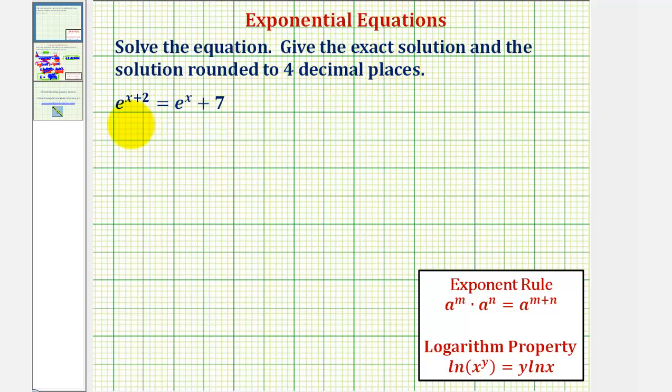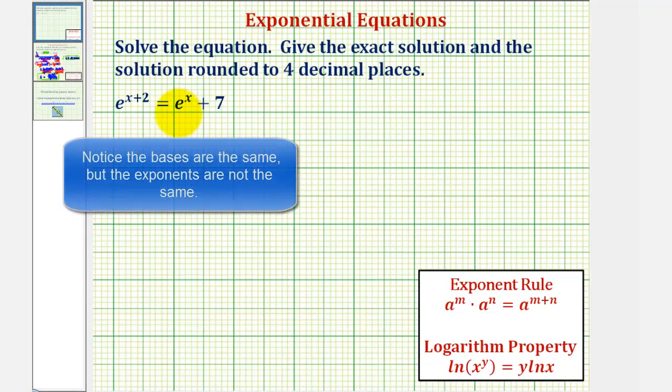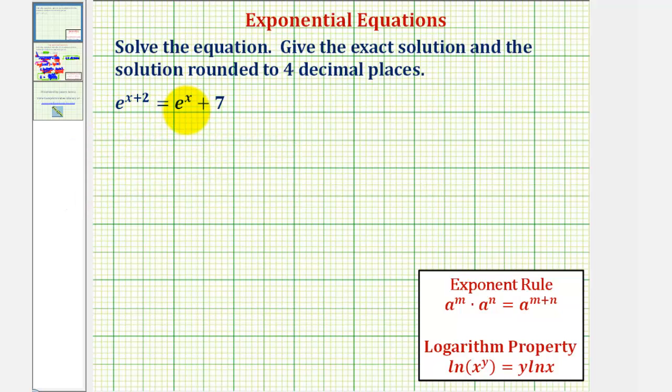This exponential equation is a little more challenging than some other exponential equations. Notice how we have two exponential terms, and they're not like terms, and we also have this plus seven here. So we cannot just take the log of both sides to solve for x because of this plus seven.